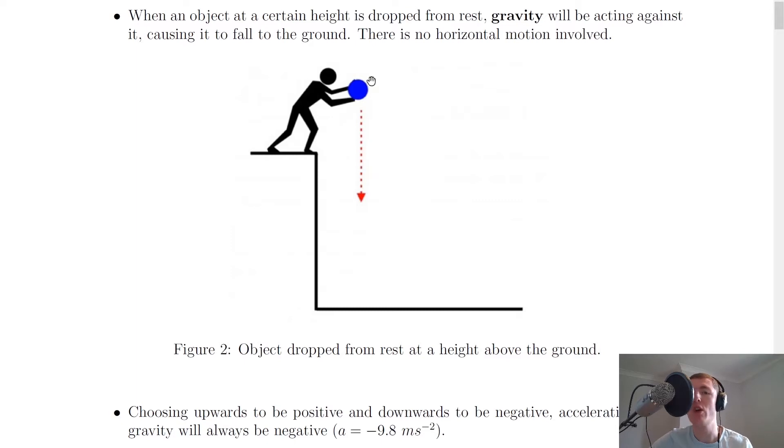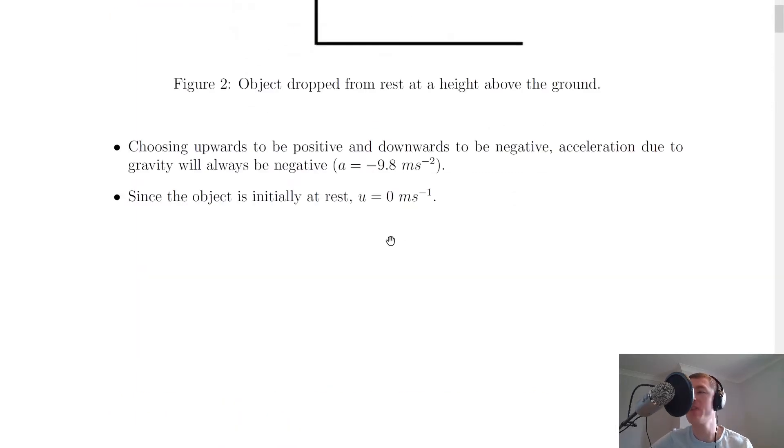So here's a picture showing you an object dropped from rest. And the only things to mention for this is that when choosing upwards to be positive and downwards to be negative, acceleration due to gravity will always be negative. So A will take a value of minus 9.8 meters per second squared if you're choosing your sign convention like this.